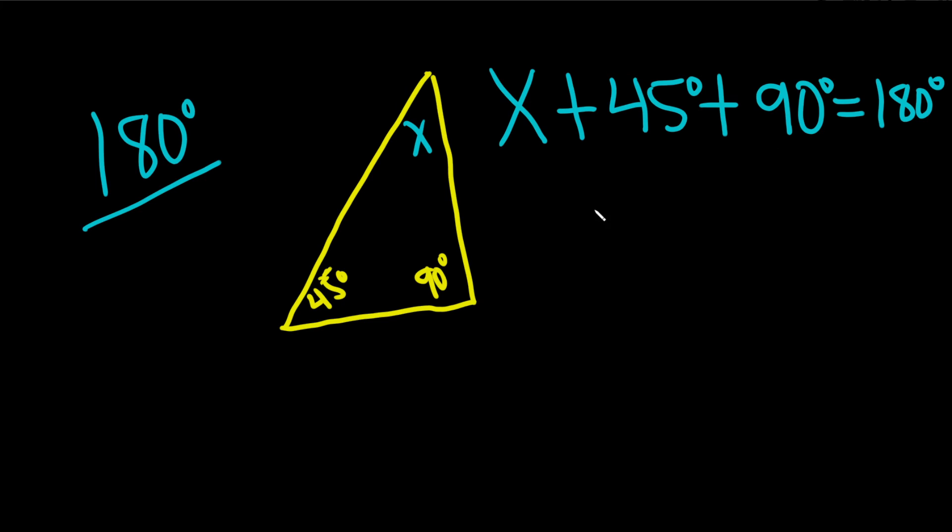So 45 plus 90 is 135, so we have x plus 135, and that's equal to 180 degrees.